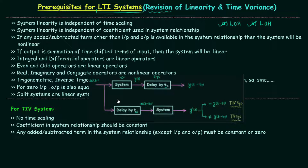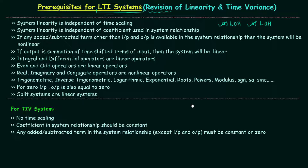This is the complete process to check time invariance, but I will not suggest following it directly since we have already solved many questions this way and obtained three sufficient and compulsory conditions. The first condition: there should be no time scaling. The second condition: the coefficients in the system relationship should be constant. The third condition: any added or subtracted term other than input and output must be constant or zero. A system satisfying all three conditions is time invariant.